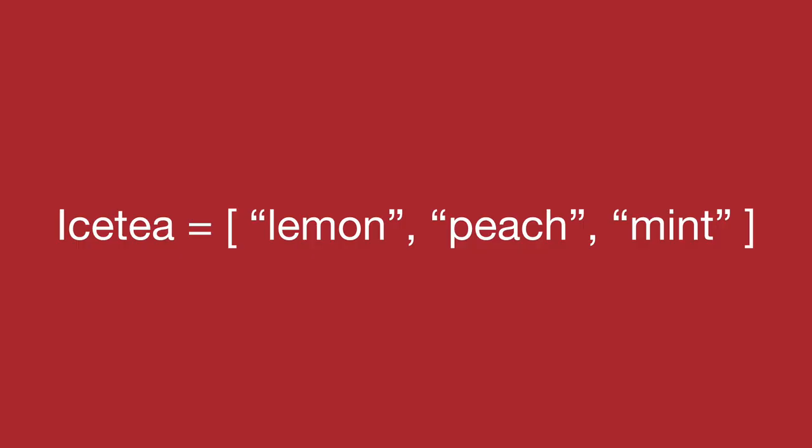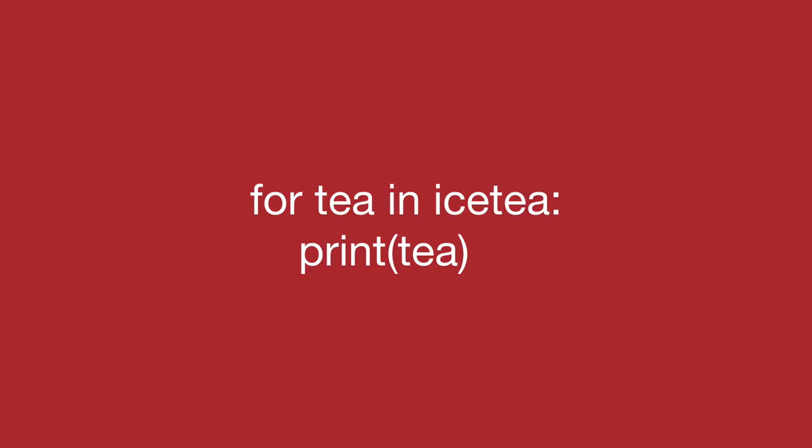Moving on to another critical aspect we are going to use in this project: arrays. How do Python arrays look? Just like a regular simple array — declare your variable. For example, if you have an array of my favorite iced tea, you can define it and put some values in it: lemon iced tea, peach, and mint. These three are flavors in the iced tea array. Another crucial aspect of building any project is loops. If you have to loop through in Python, this is the syntax.